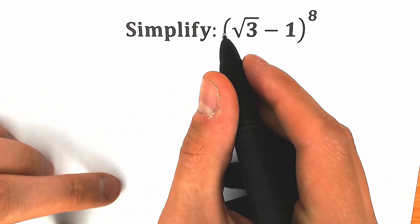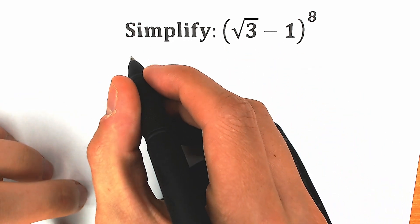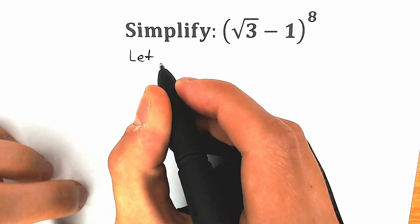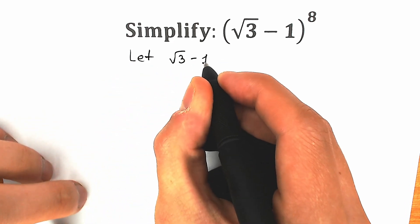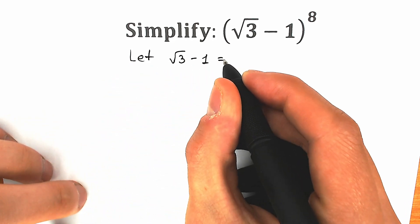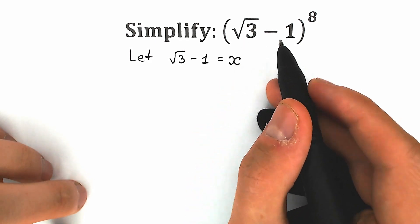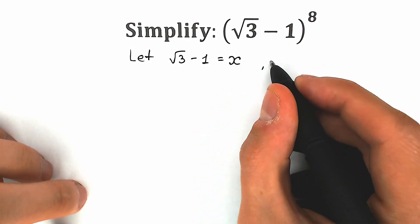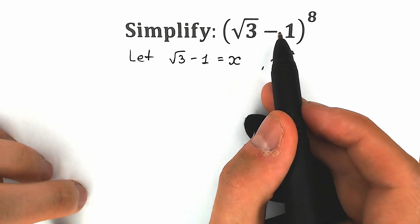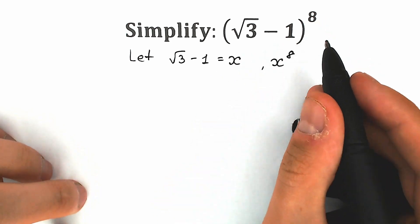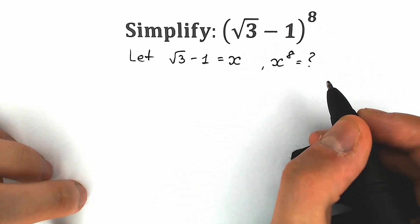First of all, let's call this square root of 3 minus 1 our x. So let x equal to square root of 3 minus 1. And basically when this is our x, we need to find x to the 8th power, because square root of 3 minus 1 is x.